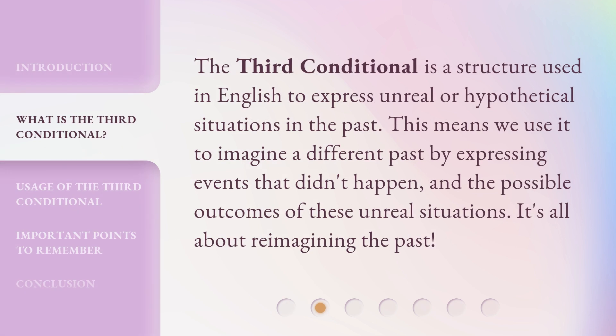The Third Conditional is a structure used in English to express unreal or hypothetical situations in the past. This means we use it to imagine a different past by expressing events that didn't happen and the possible outcomes of these unreal situations. It's all about reimagining the past.